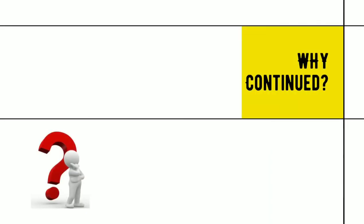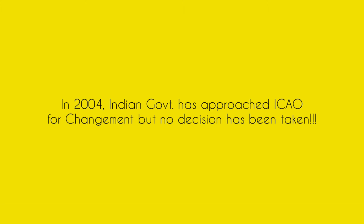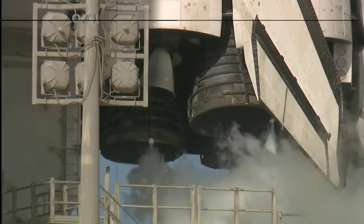The question is: why is India continuing with the VT code? The effort of the Indian government to change the registration code has been fruitless. In 2004, the aviation ministry approached the International Civil Aviation Organization to change the code, but no decision has been taken so far, which has caused a lot of commotion.